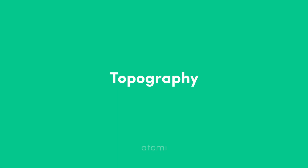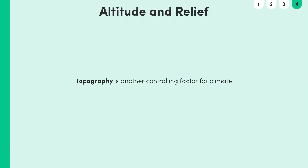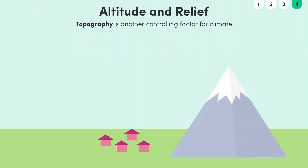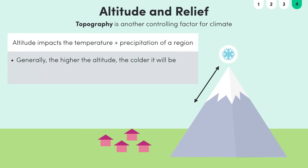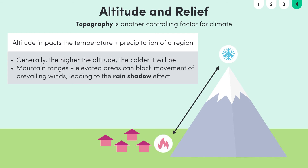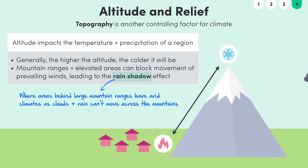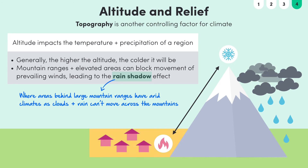Another controlling factor for the climate of a region is topography. Altitude has an effect on the temperature and precipitation of a region. Generally, the higher the altitude of a region, the colder it will be. Mountain ranges and elevated areas can also block the movement of prevailing winds. This leads to a rain shadow effect, where areas directly behind large mountain ranges have an arid climate because clouds and rain can't move across the mountains.